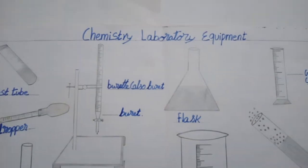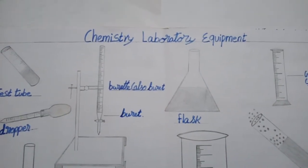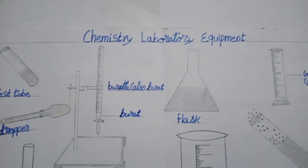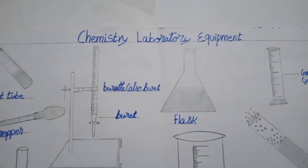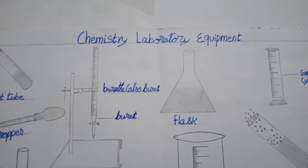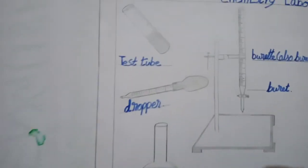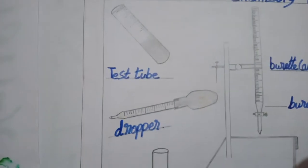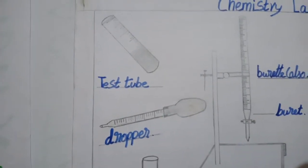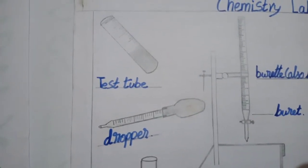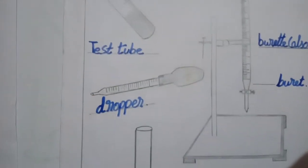Today we discuss chemistry lab equipment and basic lab equipment. Come and see this topic. First one is a test tube. This test tube is used for chemistry calculations with salt.